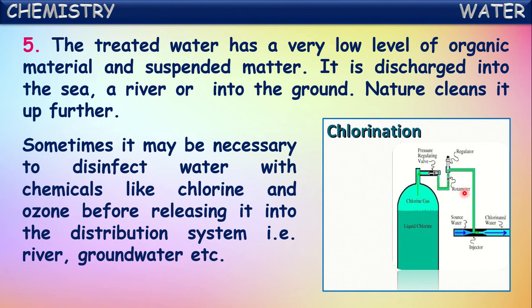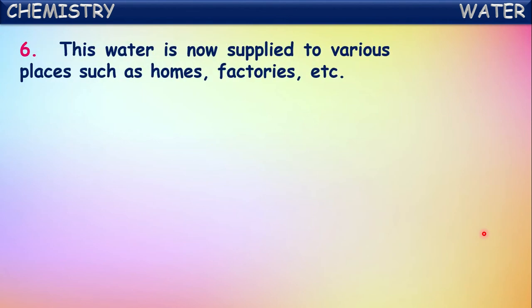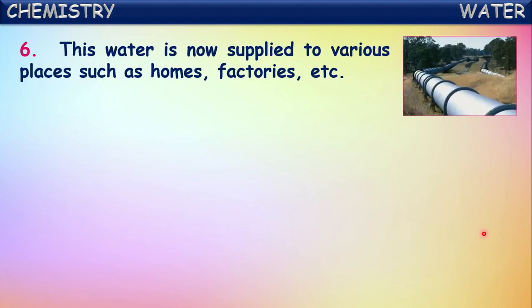To disinfect it and kill the germs and bacteria, chlorine gas or ozone gas is pumped into the water, so that the water is purified from bacteria and germs. Then only it is passed for different purposes - supplied to homes, factories, and industries through pipelines.